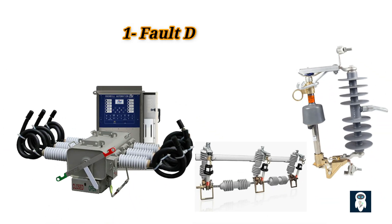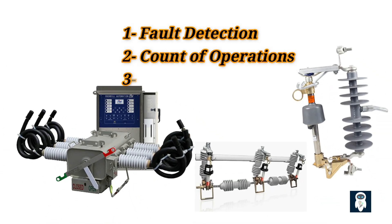Now let's break down the process. Step 1, fault detection: when a fault occurs, such as a short circuit, the sectionalizer senses the abnormal current flow. Step 2, count of operations: unlike circuit breakers that trip immediately, a sectionalizer counts the number of fault currents it experiences. It typically waits through a preset number of operations.